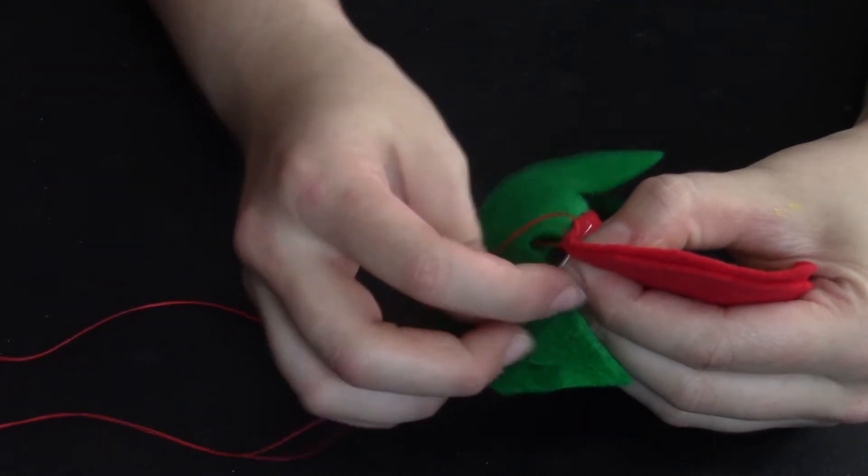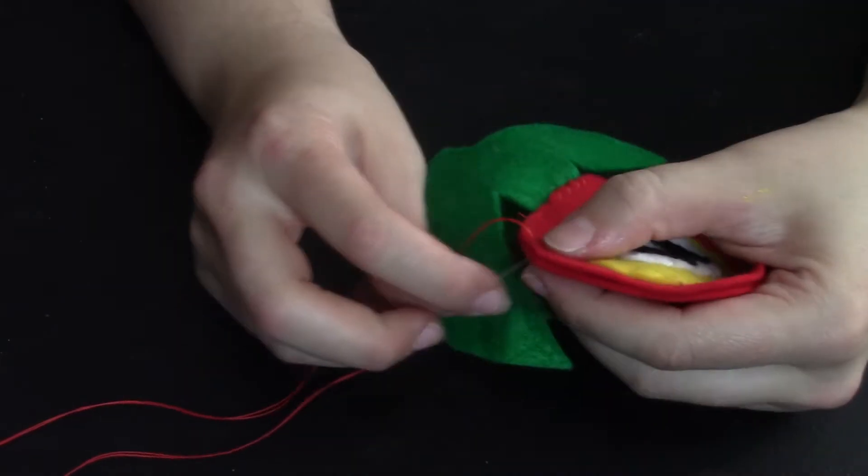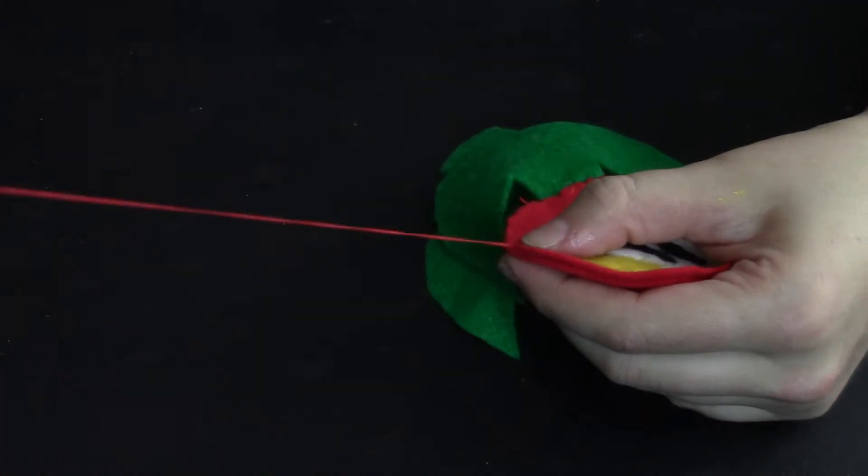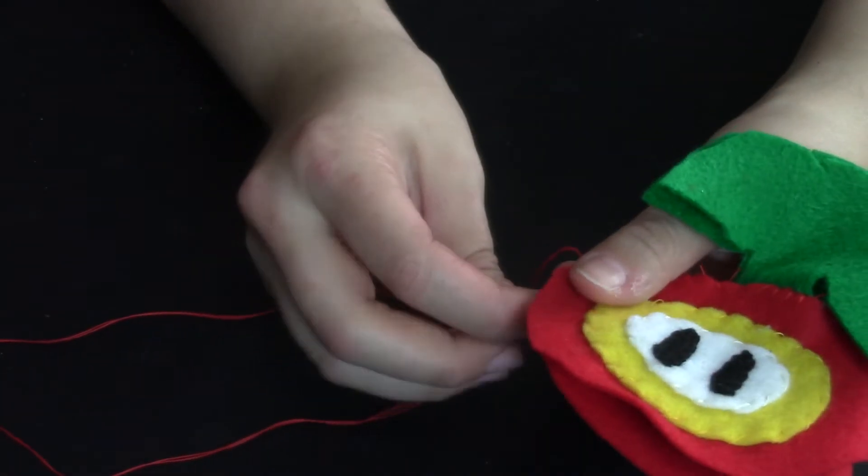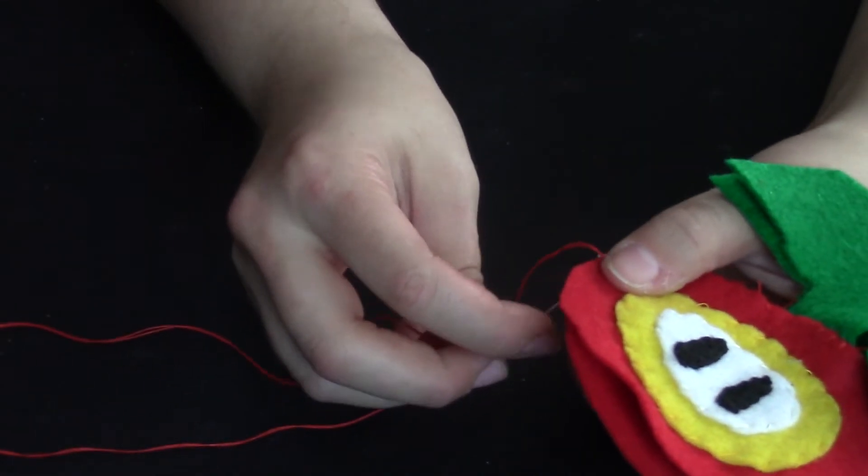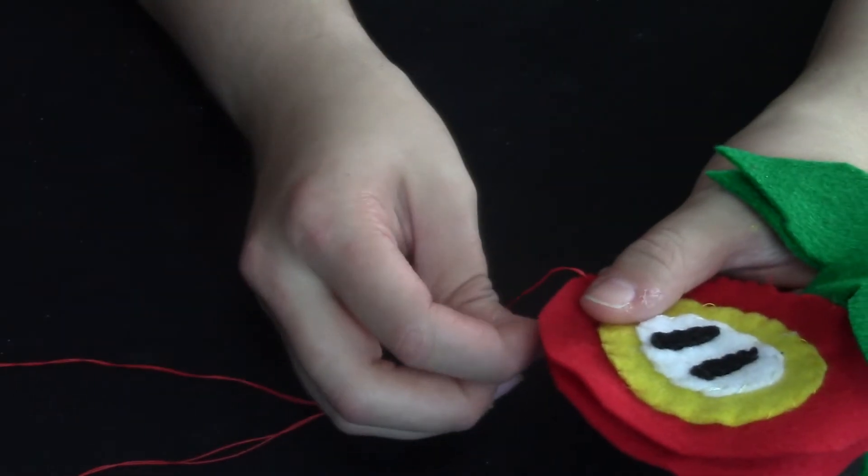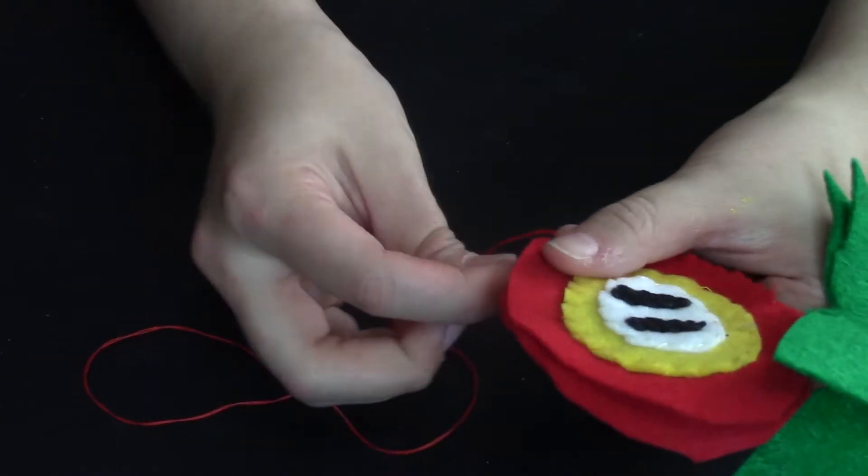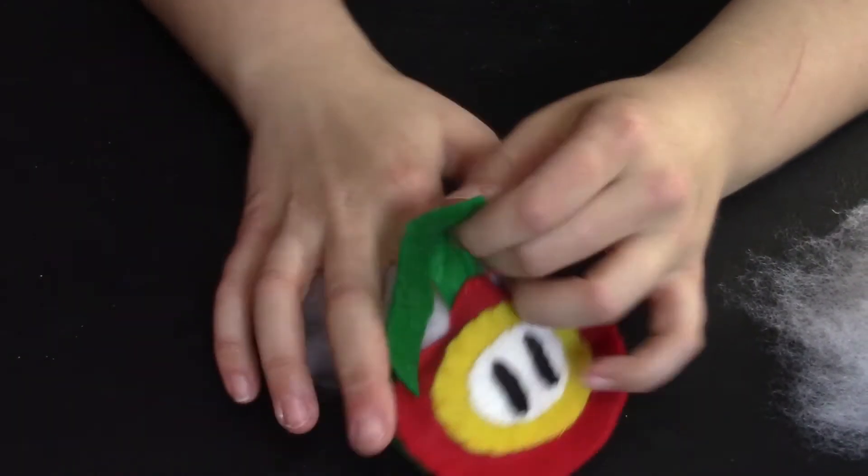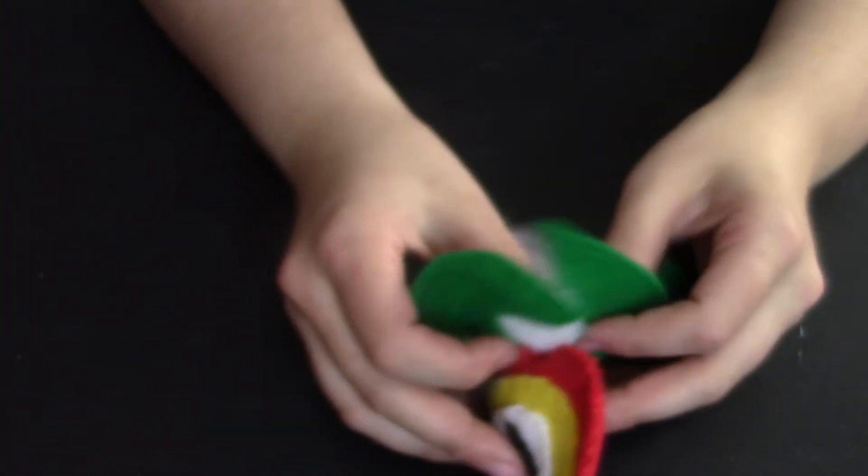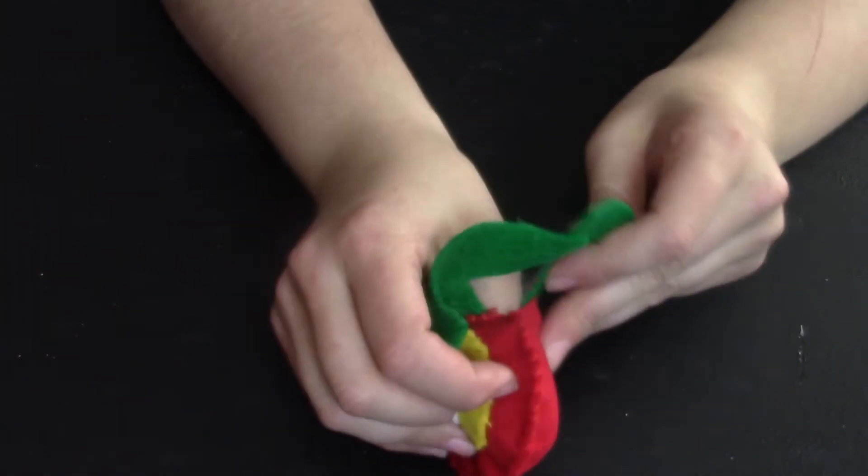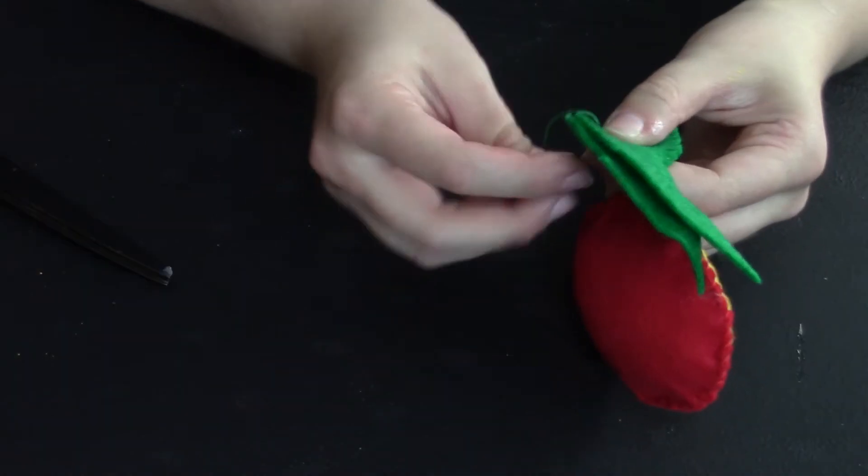Then use red thread to sew the two red ovals together. Only go from the start of the red oval beside the stem on one side to the other side on the other side of the stem. Once you're finished with that, you're going to stuff this part.